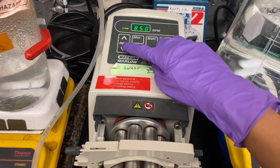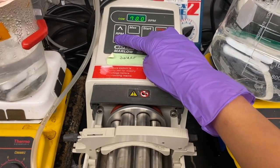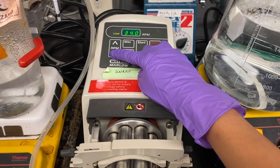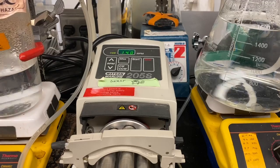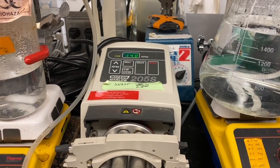After the 24 hours of running in batch mode, flow is initialized. The outlet clamp is removed and waste products can now move into the waste chamber. The speed of the peristaltic pump can be controlled to control the flow rate of the chemostat.